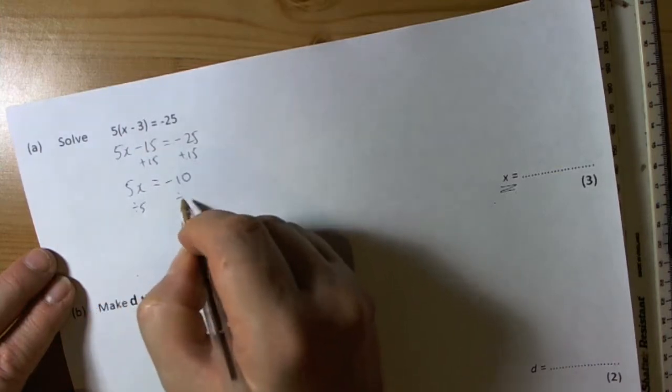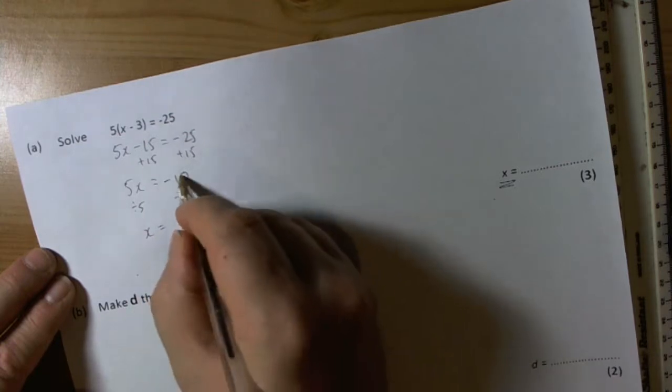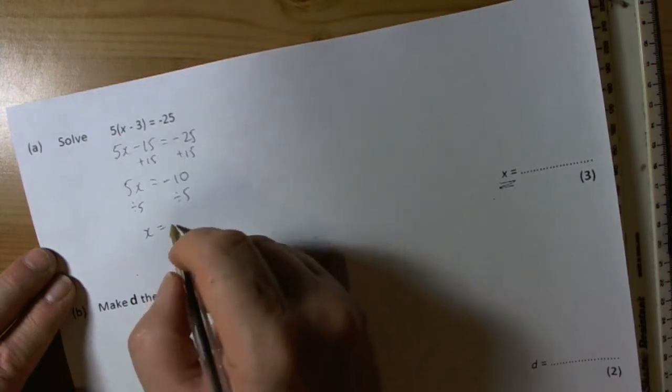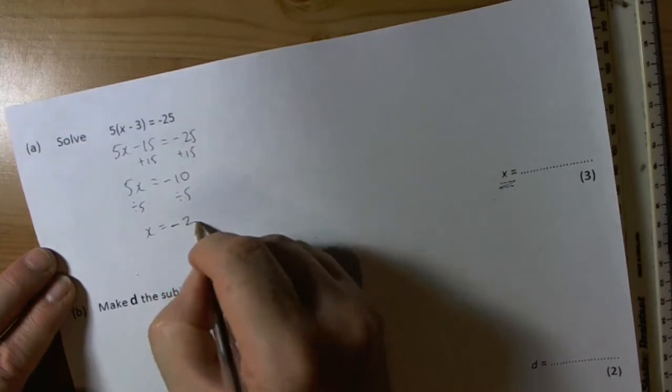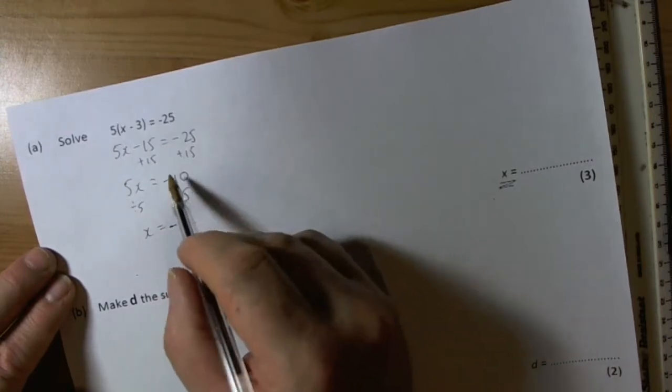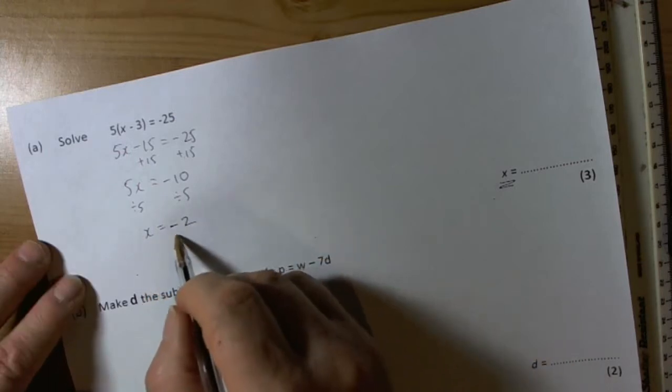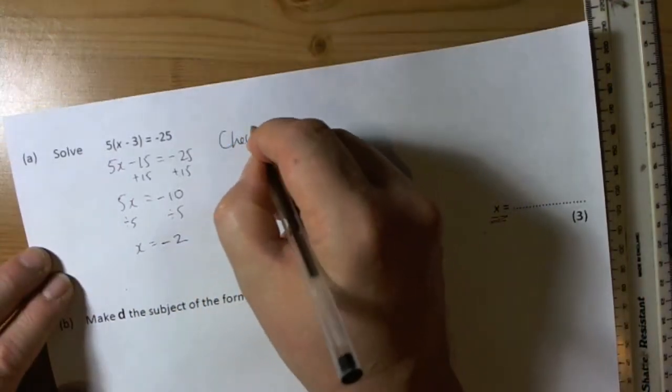This tells me that 5 times something, so the opposite of times is divide, so we'll divide by 5. Negative 10 divided by 5, from our rules of negatives, one negative sign doesn't get canceled so it stays as a negative. Negative 10 divided by 5 is negative 2, so x is worth negative 2.